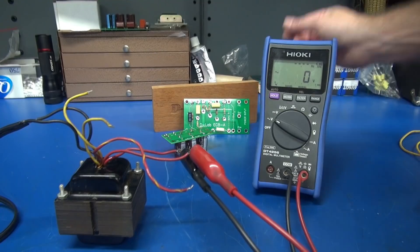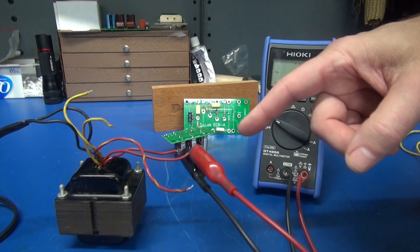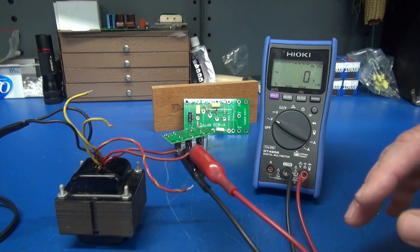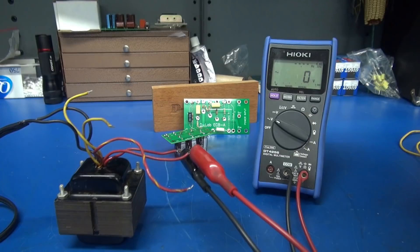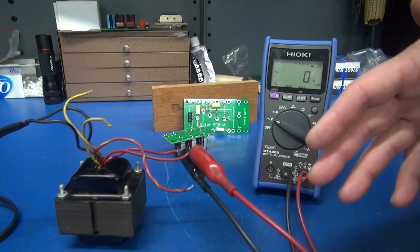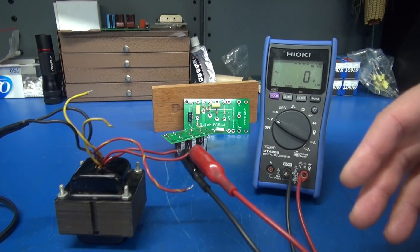So what we're going to do is we're going to test this transformer. If you look at a data sheet for a 6AQ5 tube, you'll see that it wants approximately 250 volts plate. So you've got to make sure that the power transformer that you're using does not exceed that level.